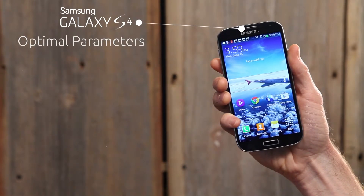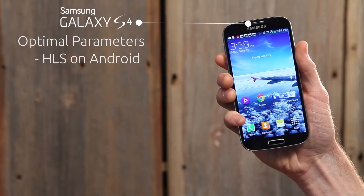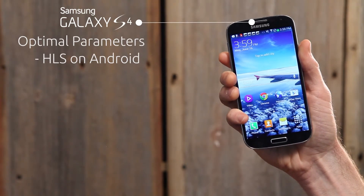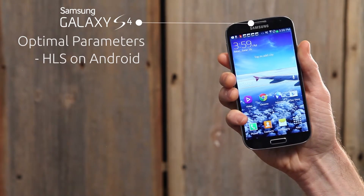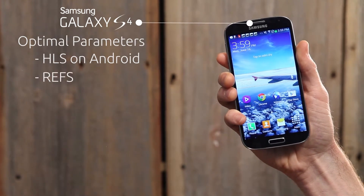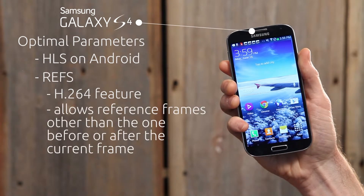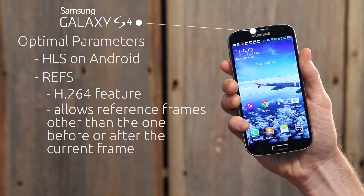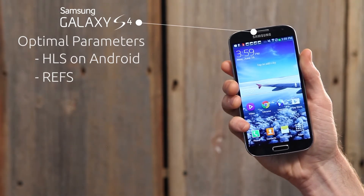Because of its support for HLS, we recommend serving this format to the Galaxy S4. However, there are specific additional parameters that are required to make HLS work on Android. The REFS parameter is an important H.264 feature that allows for reference frames other than the one before or after the current frame.